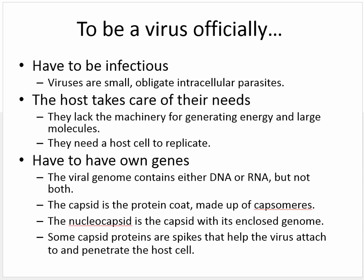What does it mean to be a virus? Every virus is infectious, meaning that it is an obligate intracellular parasite. The only way it can continue its life cycle is to infect a host cell and make that host cell do its bidding. The host must take care of every need of a virus — it produces ATP and provides the machinery to make new proteins and new genetic material. Every virus has its own genes, usually only a handful, with a very simplistic genome. That genome can be either DNA or RNA — it's never both, it's one or the other.